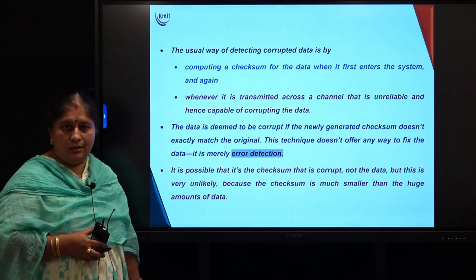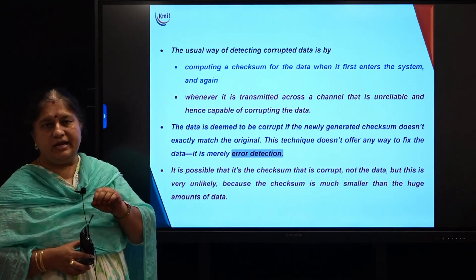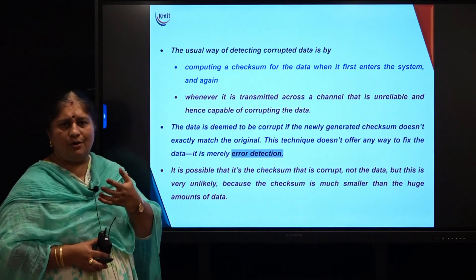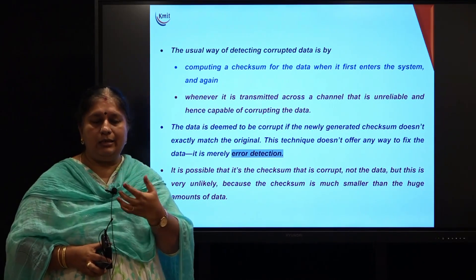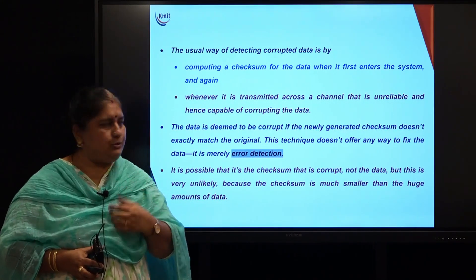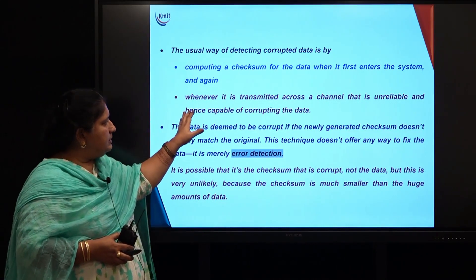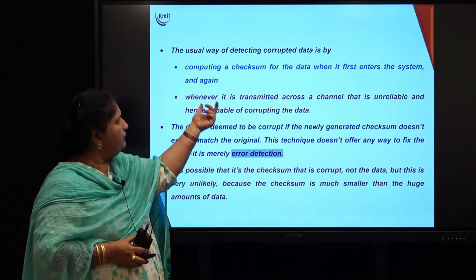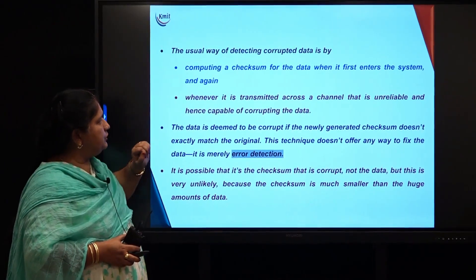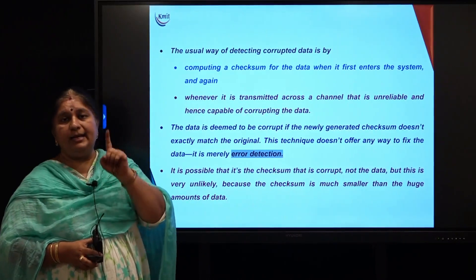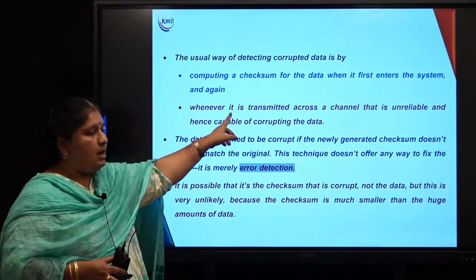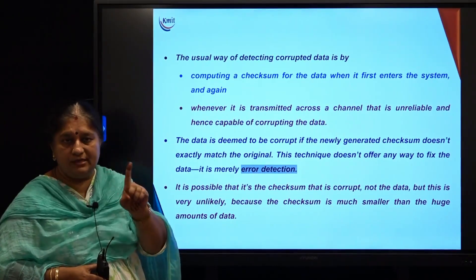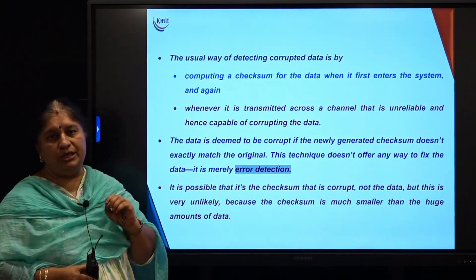How do we detect the occurrence of corrupted data — how do we check whether the data is correct or corrupt? One way is to calculate the checksum. Checksum is a process that calculates a specific value for every block of data we are trying to store. Whenever we are transmitting data across an unreliable channel, we check whether this checksum is matching or not. The checksum is calculated both the first time the data enters the system and whenever it is read.